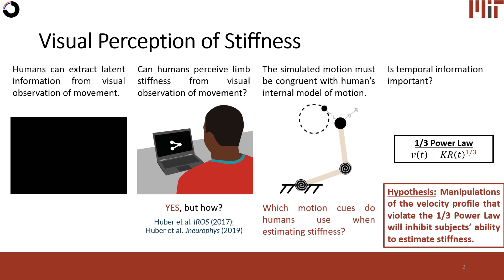In a set of new experiments, I aimed to ask: is temporal information important? In the literature, it has been shown that the one-third power law is the optimal velocity profile for humans to interact with. It has also been shown that violations of this one-third power law have negatively affected humans' ability to perceive. So I hypothesized that manipulations to the velocity profile that violate this power law would inhibit subjects' ability to estimate stiffness.